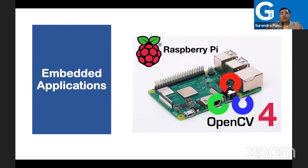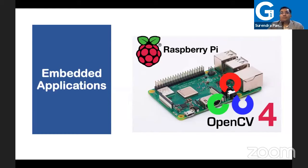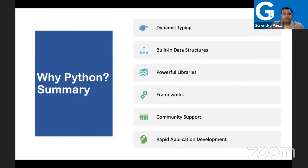For embedded programming: some students work on device projects and think you can only do embedded programming in C. But Python is written in C, and we have an interface to C. We have Raspberry Pi — a mini computer you can buy on Amazon — where you can do embedded programming as well. Kids who want to play with devices and write programming can use Raspberry Pi. In short, Python is a very, very powerful language to learn.